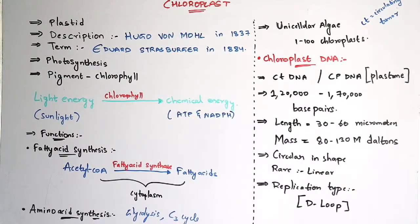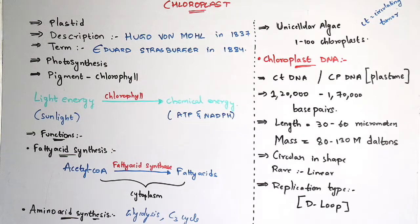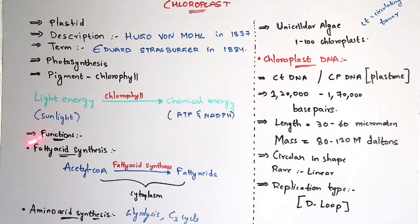From childhood we are learning what is photosynthesis. Photosynthesis is when the leaves, which consist of chloroplast, absorb carbon dioxide from the environment, and along with carbon dioxide the sunlight will also get absorbed. Due to that absorption, light energy will get converted to chemical energy by utilizing a pigment known as chlorophyll. Light energy here is nothing but sunlight, and chemical energy consists of molecules like ATP and NADPH.